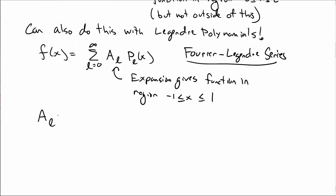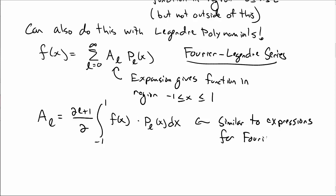The coefficients a sub l can be calculated in a formula that looks like this, 2l plus 1 over 2. And then an integral from negative 1 to 1 of f of x times p sub l of x dx. This actually looks really similar to an expression with Fourier series, where you do the integral times the sine of a function.